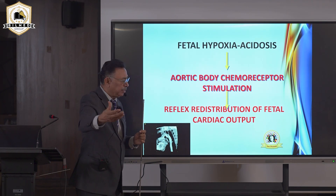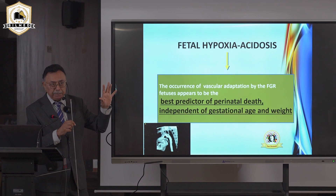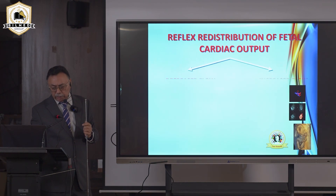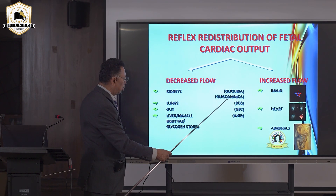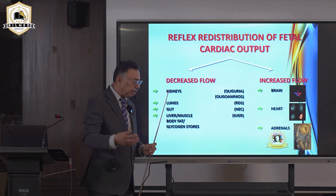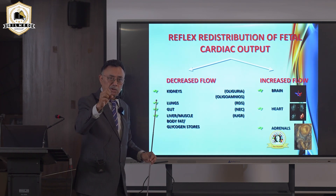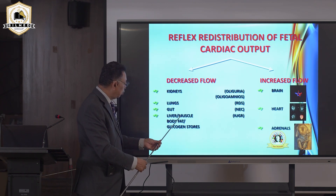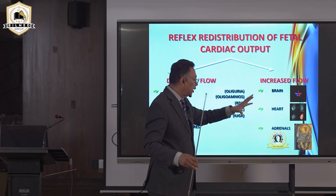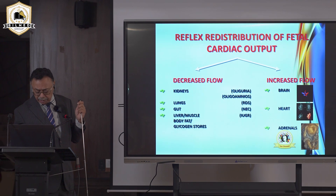Color Doppler helps grade what is happening — reflex redistribution of cardiac output tries to save the heart, brain, and adrenals until we intervene. If we do not intervene, the baby will die. Consequences of redistribution include: decreased blood to kidneys causing oligohydramnios; decreased blood to lungs causing respiratory distress syndrome at birth; decreased blood to the gut causing necrotizing enterocolitis — if you feed the baby after birth, the frail intestine can rupture. The liver and muscles also receive less blood, reducing weight, while brain, heart, and adrenals receive more.